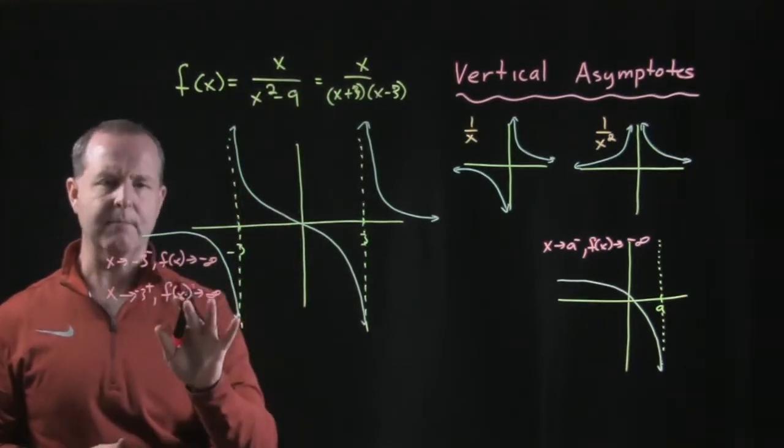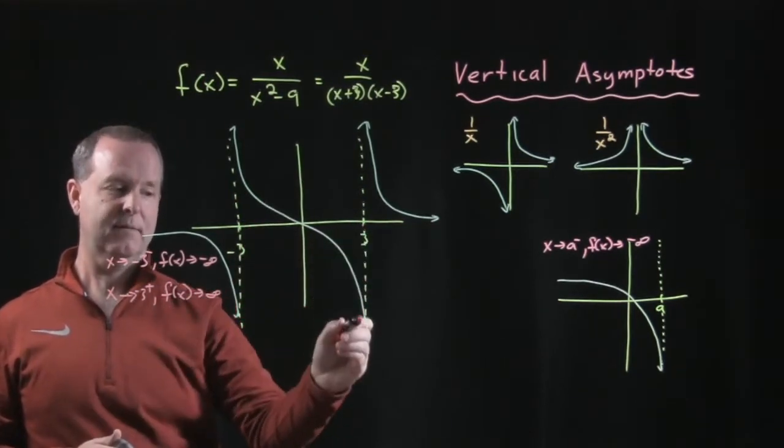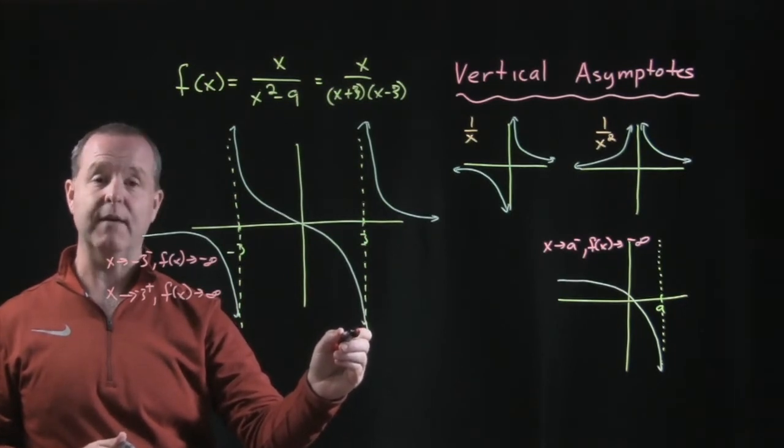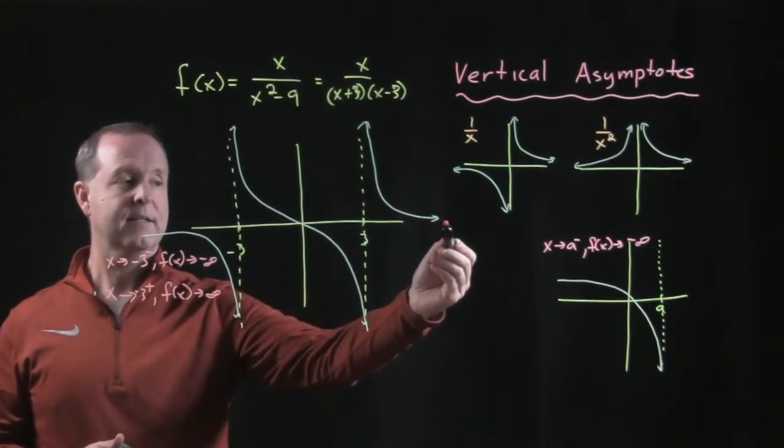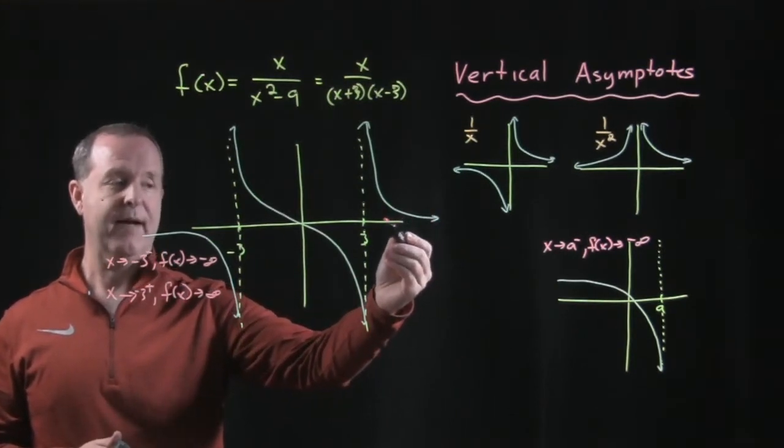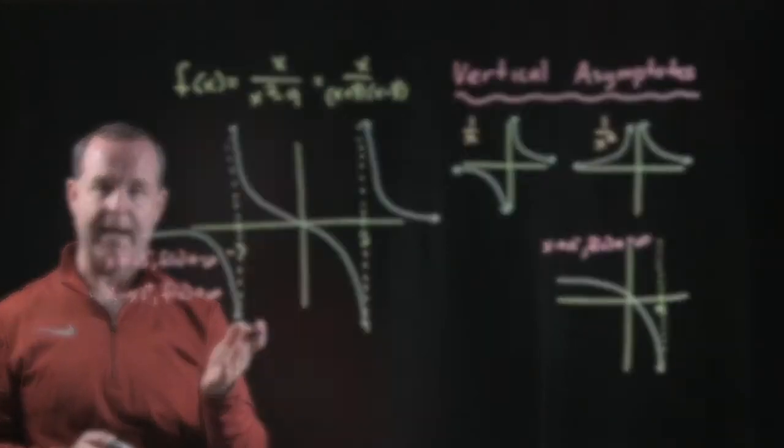And likewise, I can play the same game over here at 3. As my value of x approaches 3 from the left, my value is descending greatly. It's approaching negative infinity. As I approach 3 from the right side, my value of x is taking off to positive infinity. So there's one example.